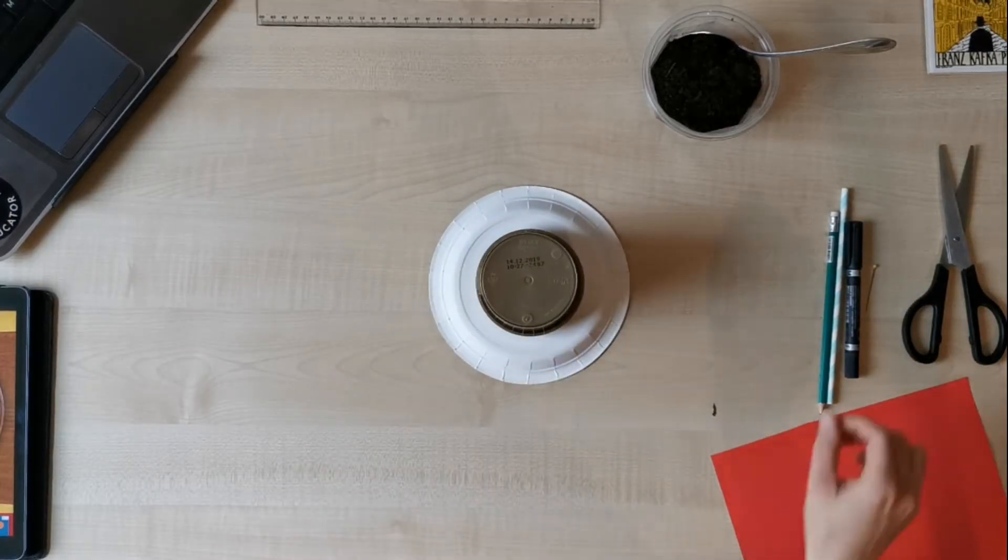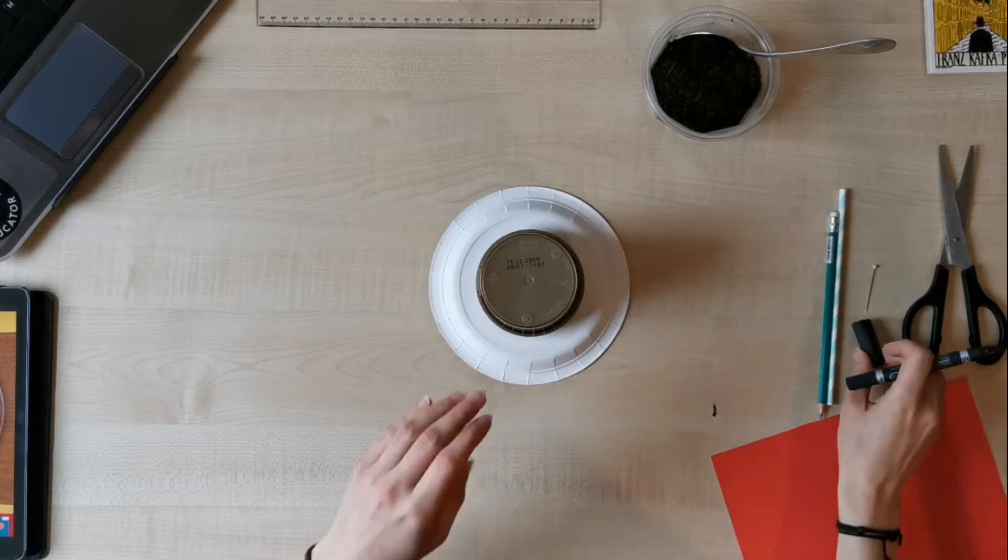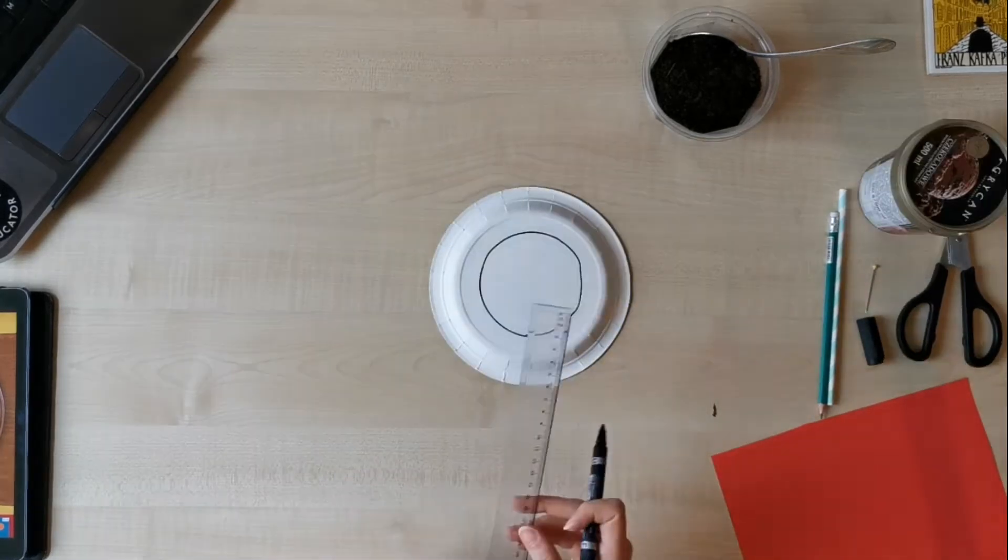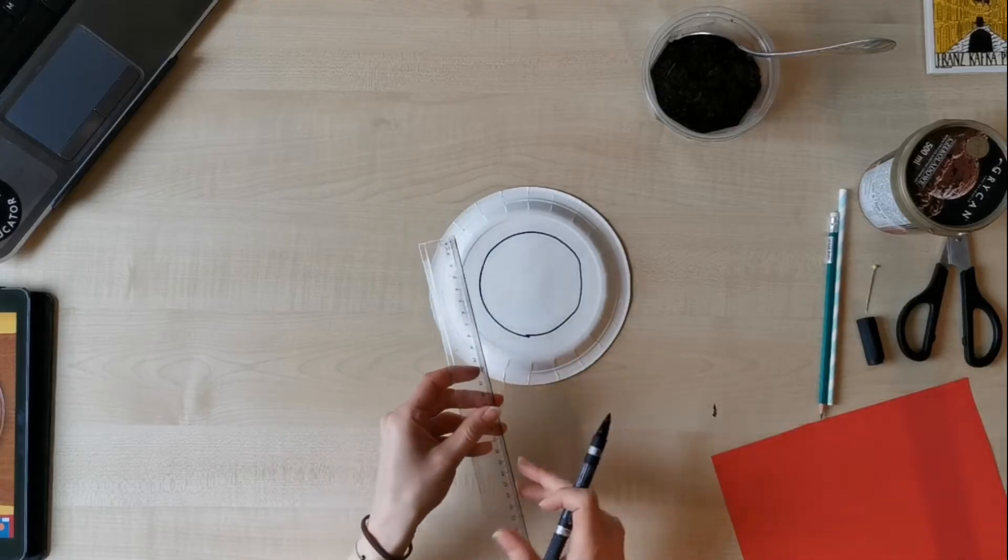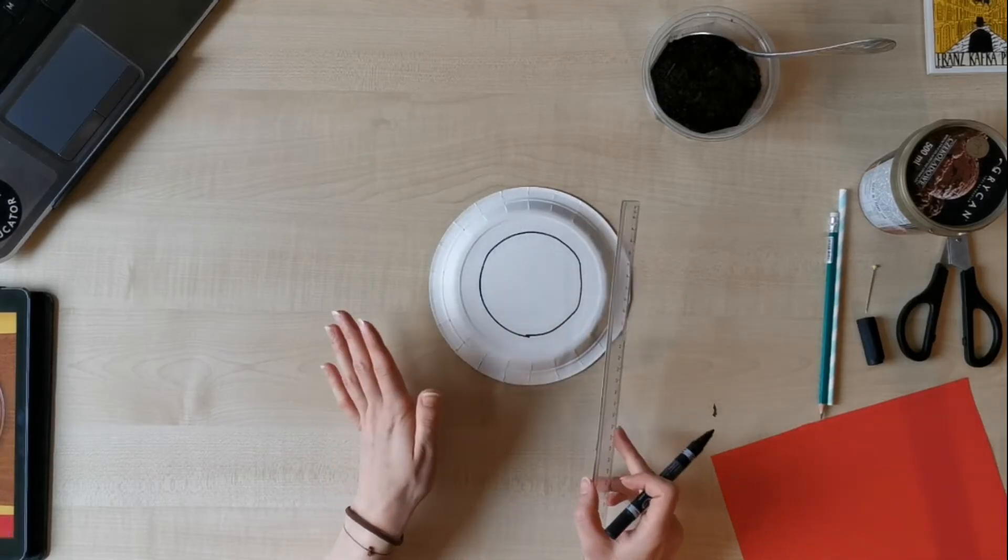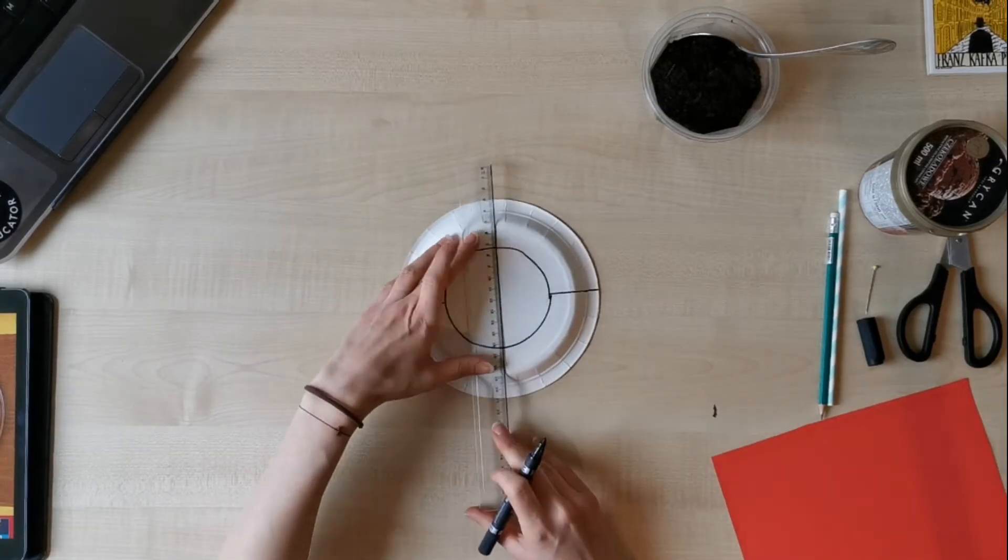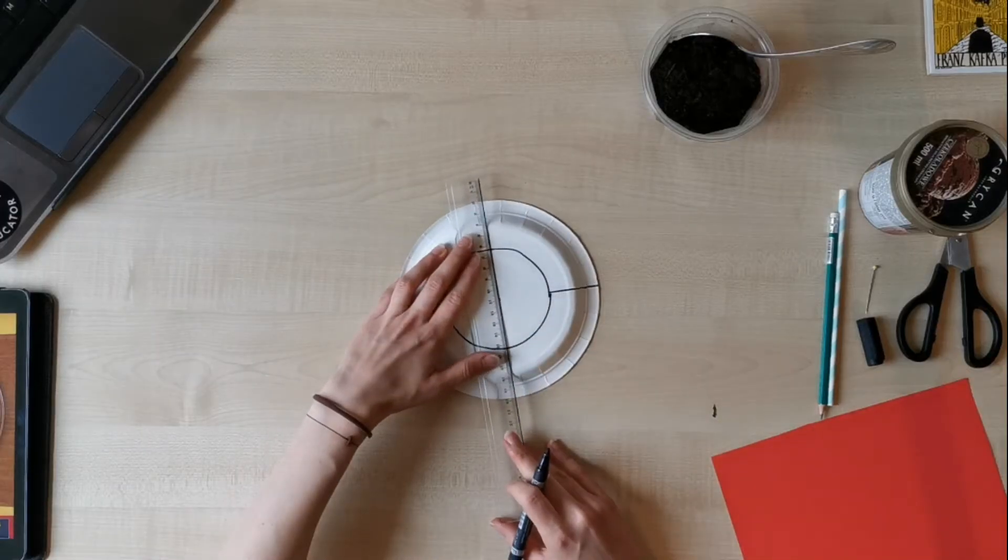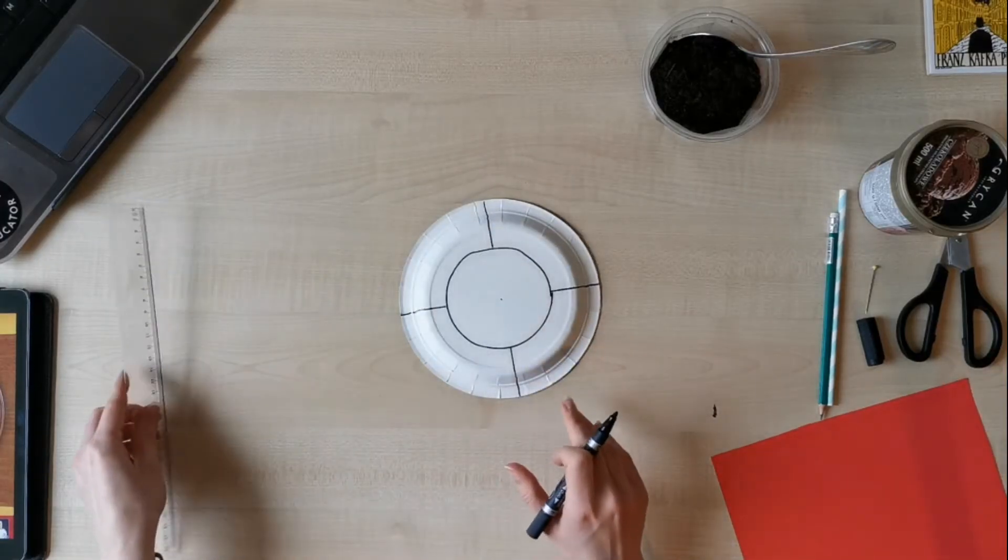Now we have to trace with the marker around the container. With the ruler we have to divide the paper plate into four equal parts. We have four equal parts.